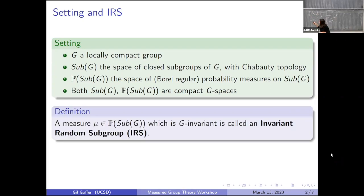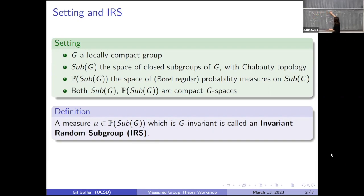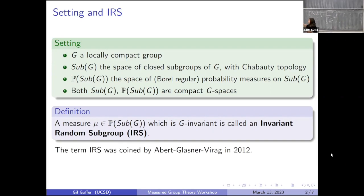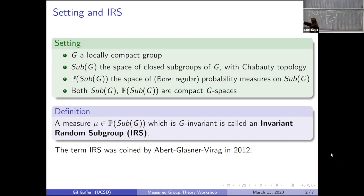IRSs are probability measures on Sub(G) which are invariant under the G-action — fixed points of G acting on P(Sub(G)). The term IRS was implicitly present for a long time; for example, the Stuck-Zimmer theorem from the 90s used IRSs but thought of them as stabilizers of probability measure-preserving actions. The term 'invariant random subgroup' and the approach of studying them as measures on subgroups is due to Abel, Glasner, and Virag in 2012.